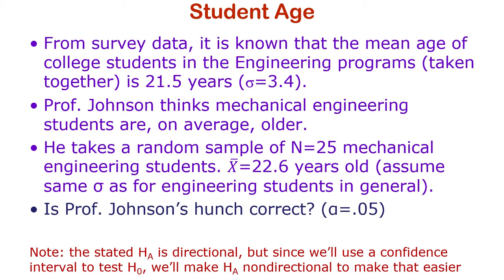He assumes the standard deviation of the mechanical engineering population — sigma — is the same as for all engineering students: 3.4 years. That's probably a reasonable assumption. So is Professor Johnson's hunch correct?